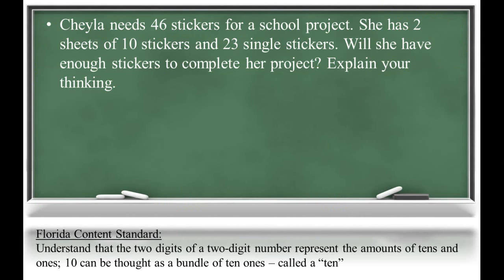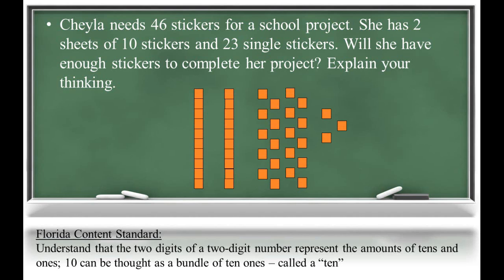Here is an example of how students might be asked to think flexibly about numbers. Shayla needs 46 stickers for a school project. She has two sheets of 10 stickers and 23 single stickers. Will she have enough stickers to complete her project and explain your thinking? Now a child may think through this by trading the 21s for two tens to make the model easier to count. Now she can recognize that Shayla has 43 stickers, which is not enough to complete the project.